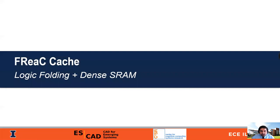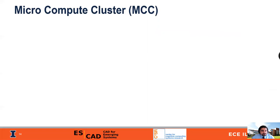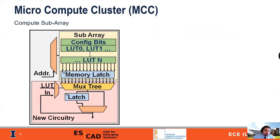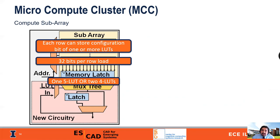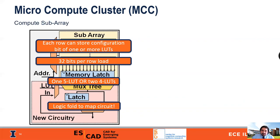With this in mind, let's introduce FreeCache. FreeCache leverages this dense SRAM in the LLC and logic folding. In order to do so, we add a MUX tree and a latch to the output of the existing sub-arrays in the last-level cache. This creates what we call a compute sub-array. We can now store in each row of the sub-array configuration bits for one or more lookup tables. By simply reading out a new row, we've configured a new lookup table. For example, if we have 32 bits in a row, we can store either one 5-input lookup table or two 4-input lookup tables. We can then use logic folding to map a large circuit into the smaller area.